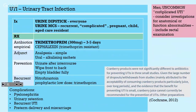In OSCEs, a man with UTI symptoms is complicated and requires investigation. Urine dipstick for all; urine MCS if recurrent, complicated, pregnant, child, or elderly. Antibiotics: trimethoprim for 3–5 days or cefalexin depending on resistance — that's why you do MCS. Analgesia and Ural sachets for symptomatic relief. Long-term prevention: urinate after intercourse, wipe front to back, empty bladder fully. Cranberry products — no evidence they work long-term, so you can advise against them. Recurrent UTIs: prophylactic low-dose trimethoprim or nitrofurantoin. Complications: pyelonephritis, urinary retention, recurrent UTIs, and in pregnancy, preterm delivery and miscarriage.